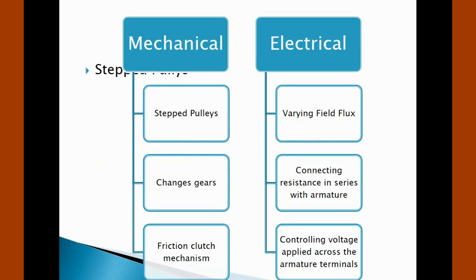This can be done by mechanical means such as strap pulleys, change gears, friction clutch mechanism, and electrical means — varying field flux, connecting resistance in series with armature, and controlling voltage applied across the armature terminal.